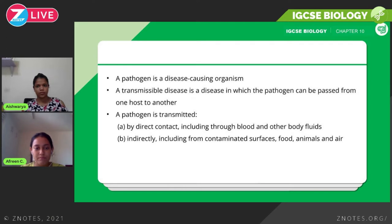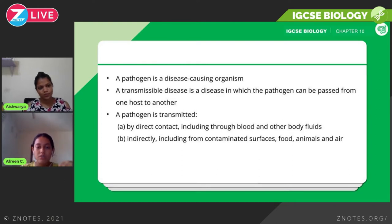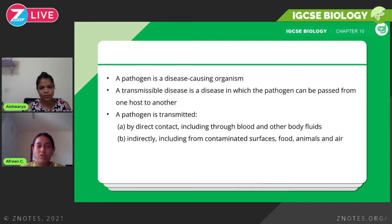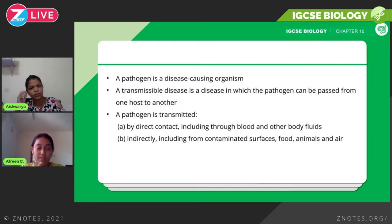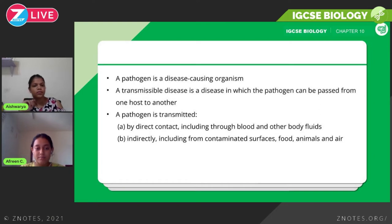Next, we need to know how a pathogen is transmitted. There are two main ways. First is direct contact — this is when you come into contact with the bodily fluids of an infected person, such as blood, saliva, or feces.